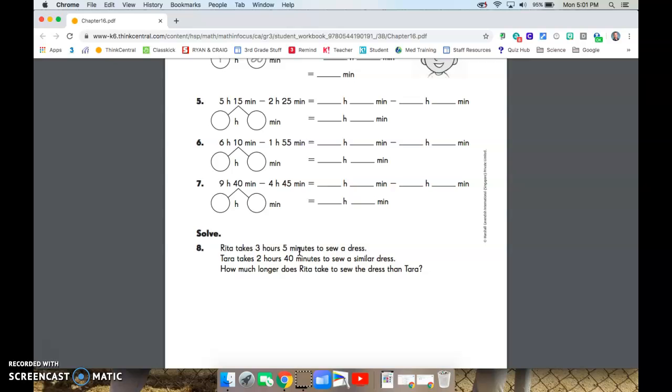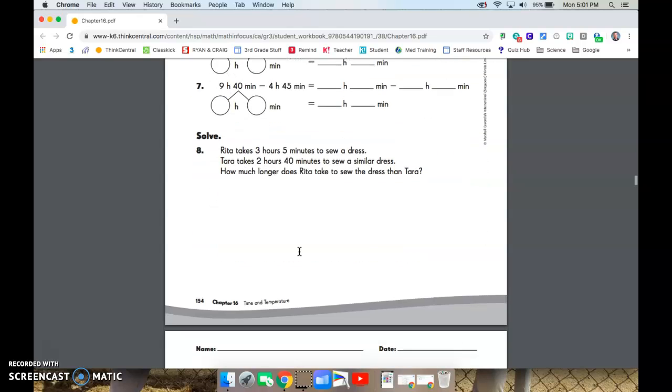So I'm going to take that three, I'm going to change it to two hours. And I'm going to add 60 minutes to the five. So we're looking at 65 minutes. So it's two hours and 65 minutes minus two hours and 40 minutes. So two hours and two hours are going to cancel each other out. That leaves the 65 minutes minus the 40 minutes equals a 25-minute difference. So how much longer does Rita take? Rita takes 25 minutes longer.